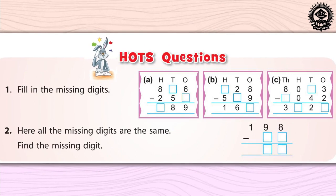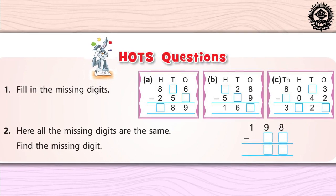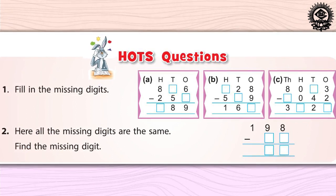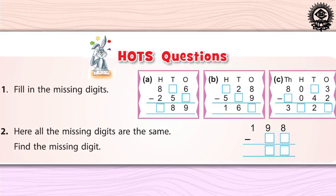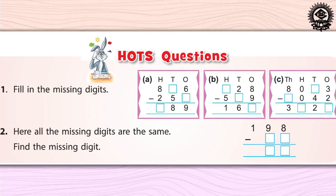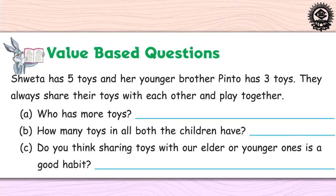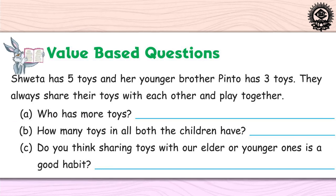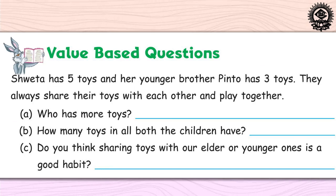HOTS. Higher order thinking skills involves the learning of the complex. It helps in improving judgmental skills such as critical thinking and problem solving. Value based questions are meant to inculcate moral values in children. It gives an opportunity to show the values present in oneself.